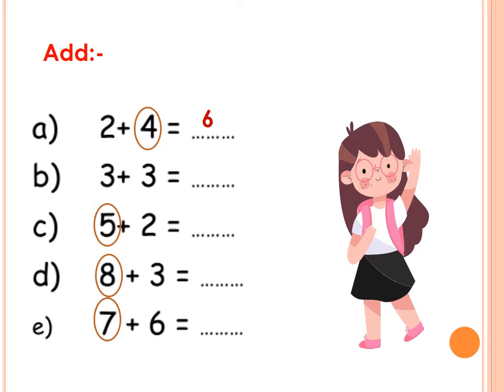Answer the next one with me. 3 plus 3 equals — 3 in your mind and 3 in your fingers. After 3: 4, 5, 6. Also 6. The next one: we have 5 plus 2. Who is the bigger? 5. Put it in your mind, then 2 in your fingers. After 5: 6, 7.